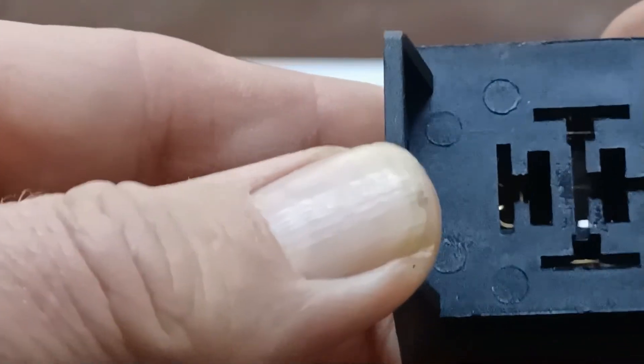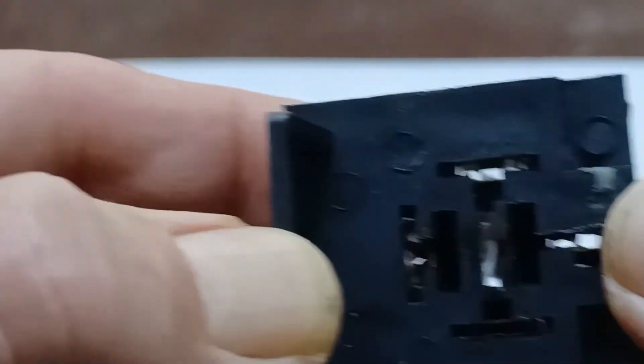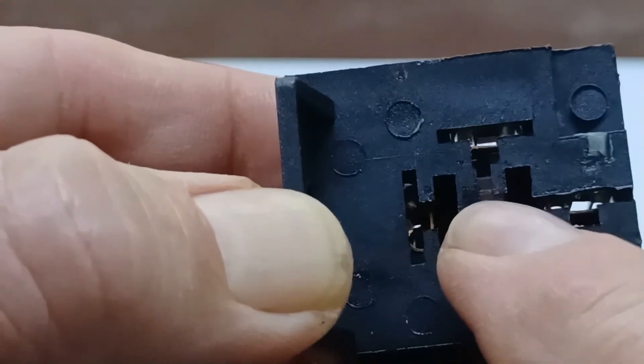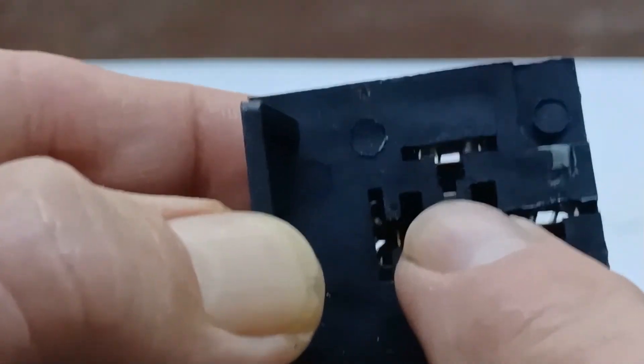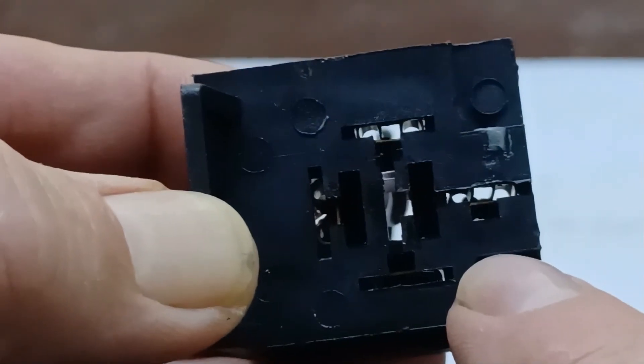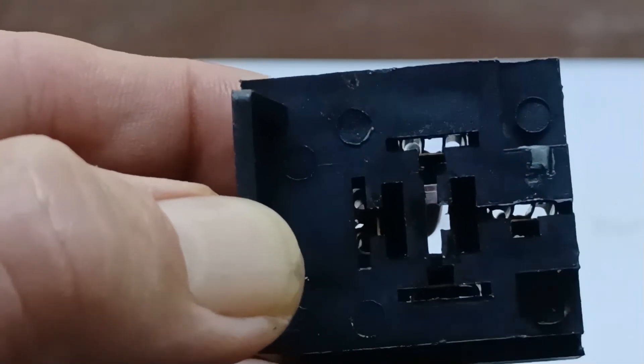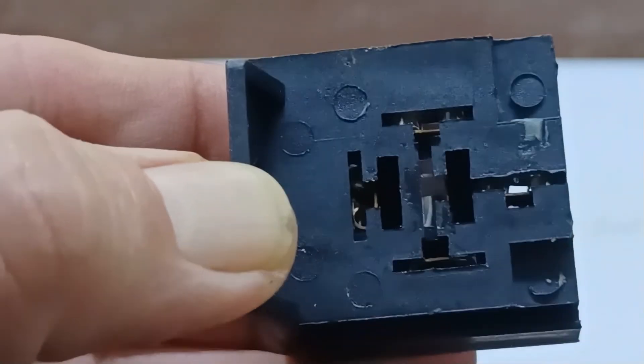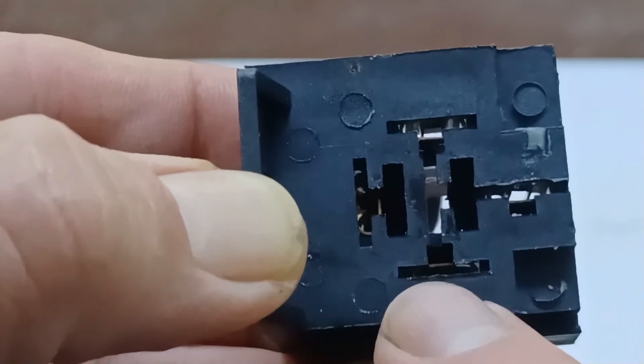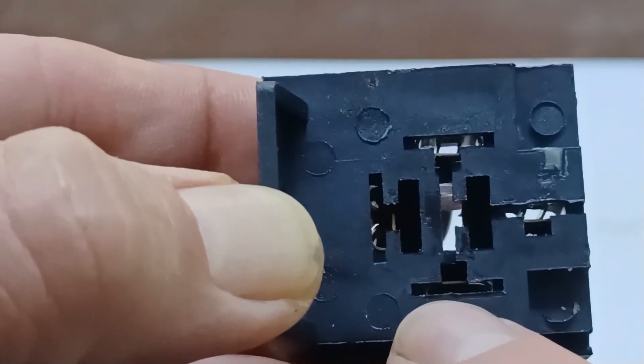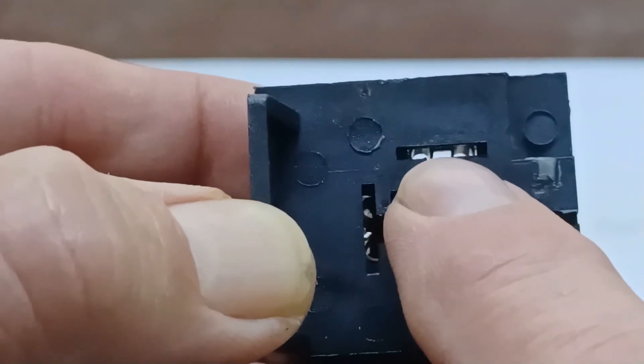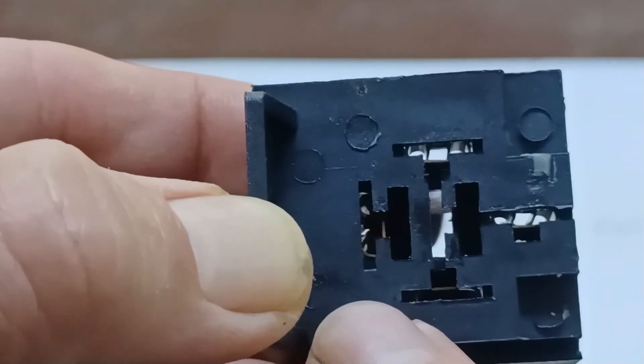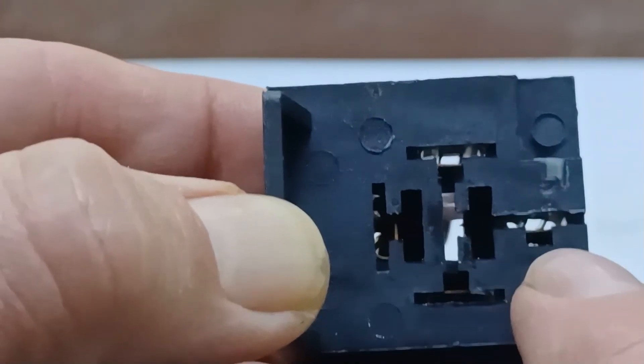Here we got 87 on this one, that's going to the fan. And 87a is empty right there in the middle. Number 86 is going to go to my toggle switch, and number 30 is going up to my 30 amp circuit breaker. And this is number 85 which goes directly to ground.